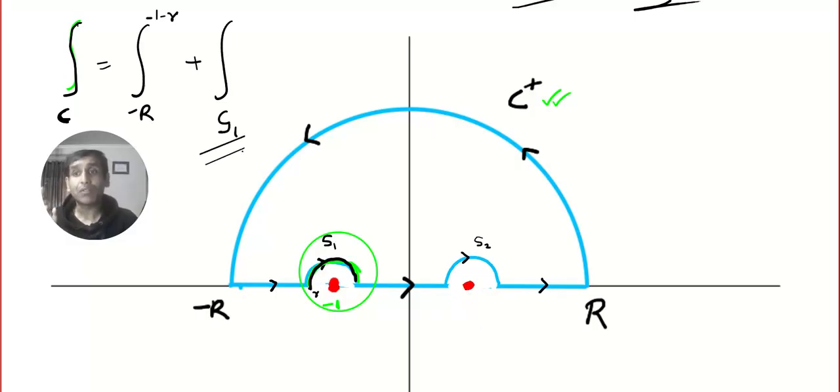And then from this point—that will be minus 1 plus r, minus 1 plus r—to the next circle, plus this one will vanish. I told you Cauchy's lemma. And then from here to here and from here to here.